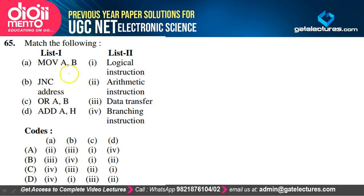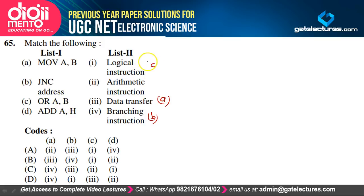Classify 8085 instructions: MOV A,B → data transfer; JNC (jump not carry) → branching (B-4); ORA B → logical instruction (C-1); ADD H → arithmetic instruction (D-2). Option B satisfies our explanation.